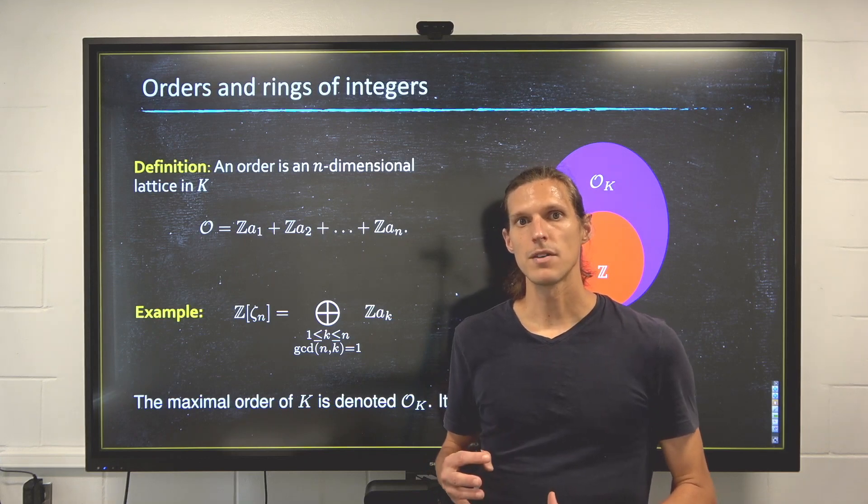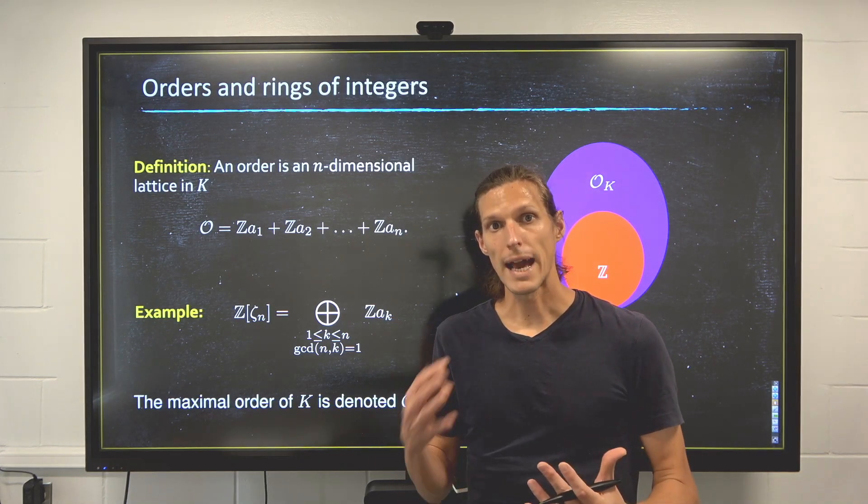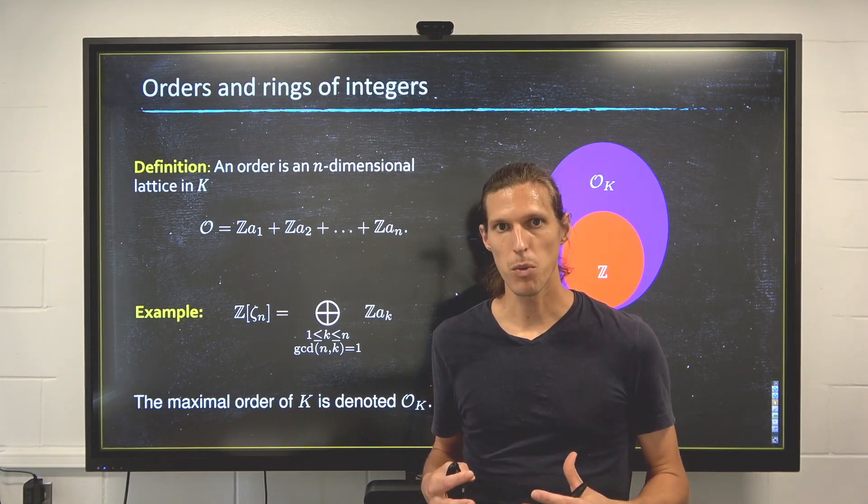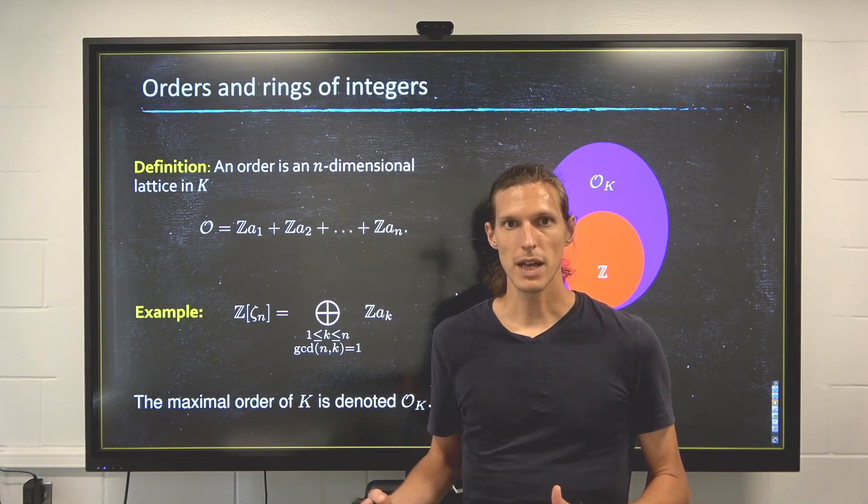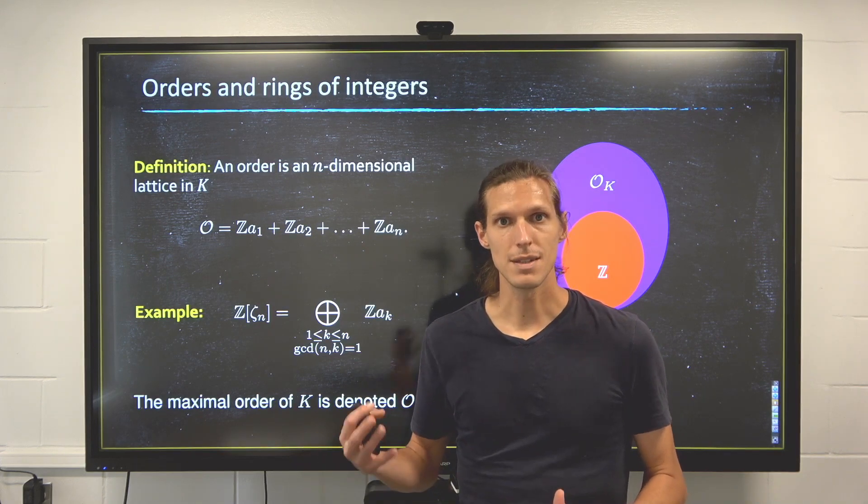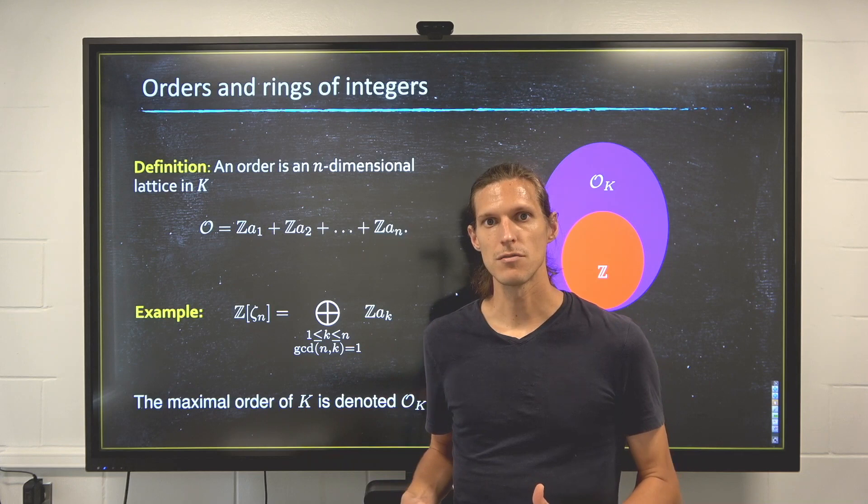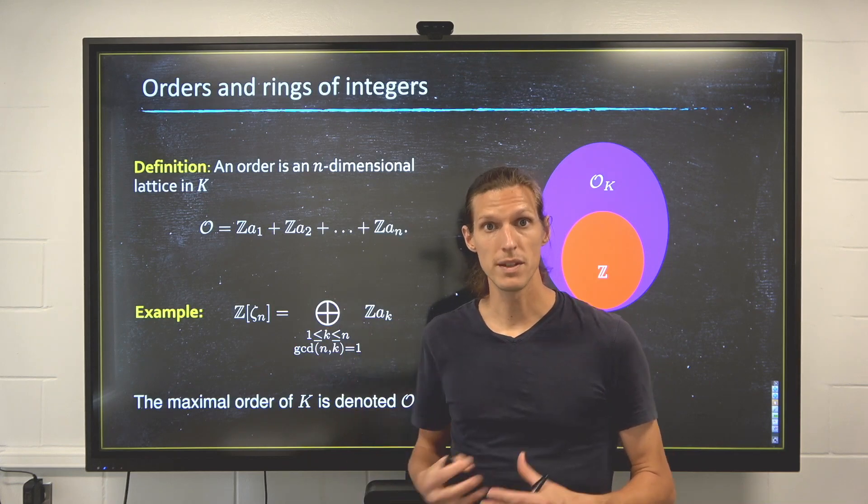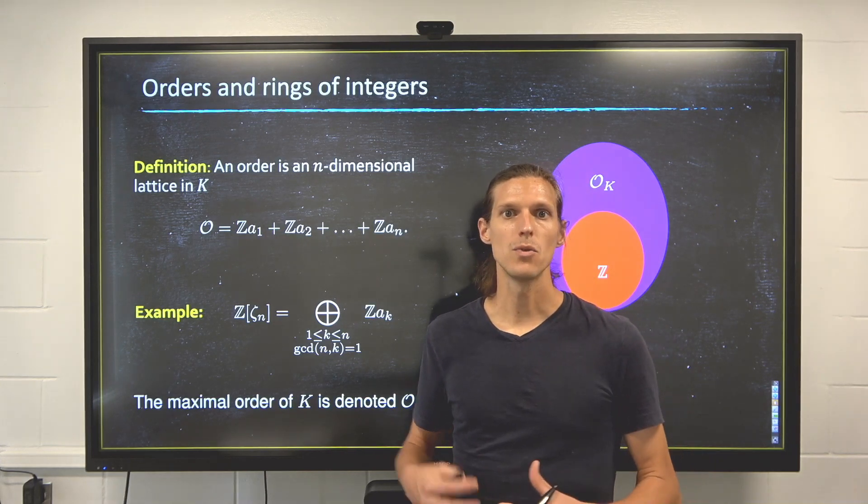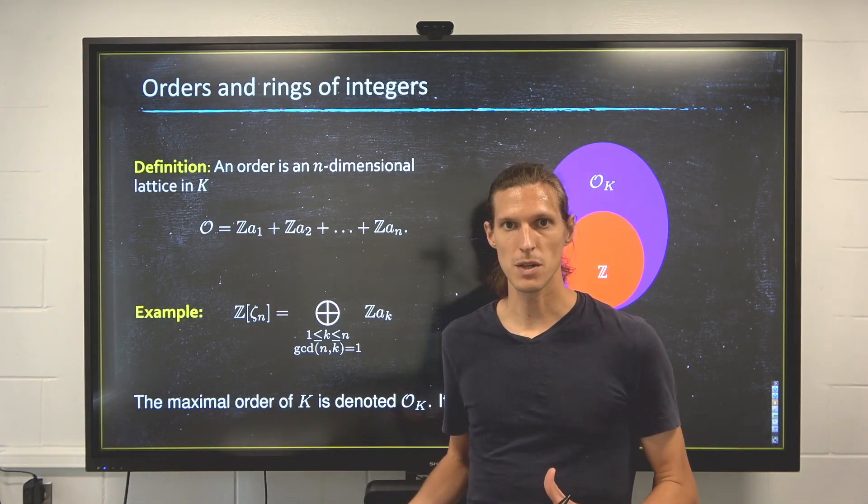Now we're going to have to talk about ideals and orders, so the ring structure of an order of course is really important because in subsequent lectures we'll be talking about ideals, and then of course the class group is the ideal class group. So the fact that we have a ring to begin with is of course essential to all the work that we'll be doing in the subsequent lectures.